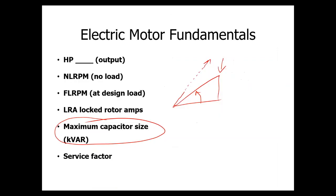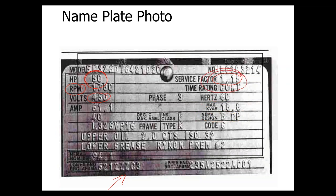Service factor is even easier. That's basically another way to say overload factor. That means you can run a motor overloaded a certain percentage. In this case, this motor has a service factor of 1.15, which means that it can be run 115% of rated load.